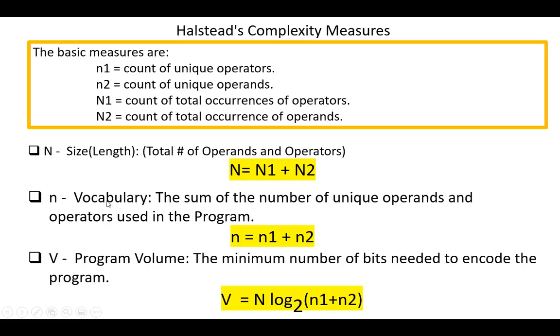Small n, vocabulary, the sum of the number of unique operands and operators used in the program. Small n equals small n1 plus small n2.